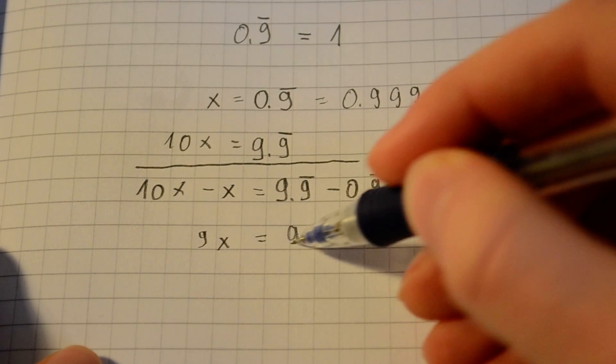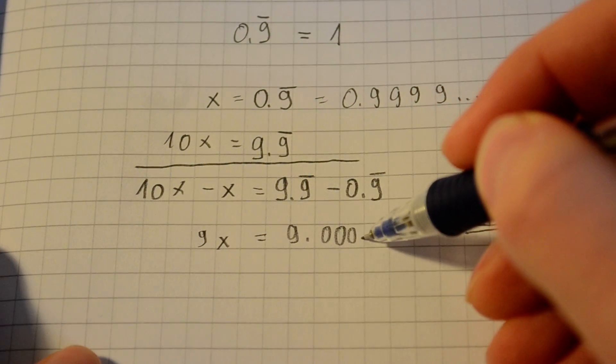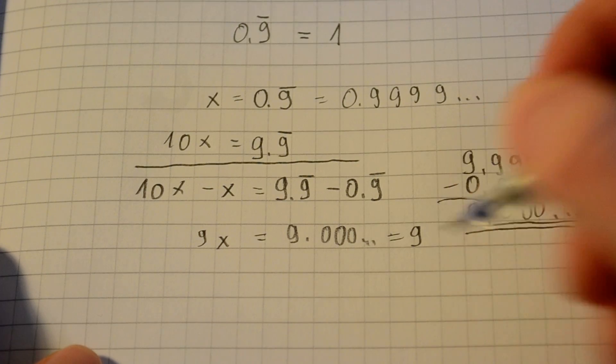So you get 9x equals 9.000... which is the same as 9.